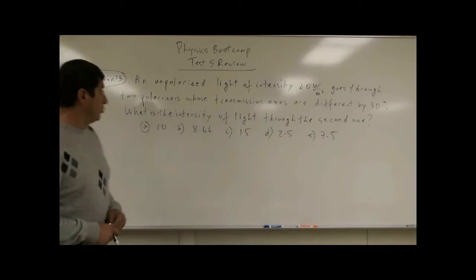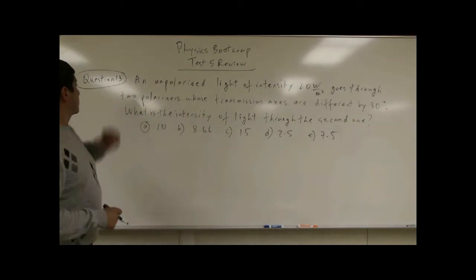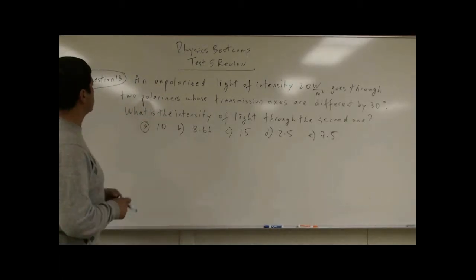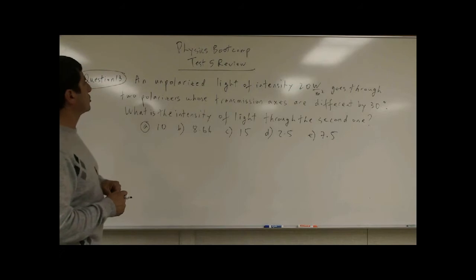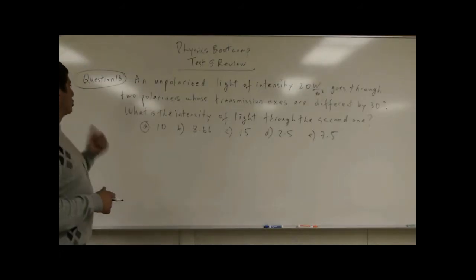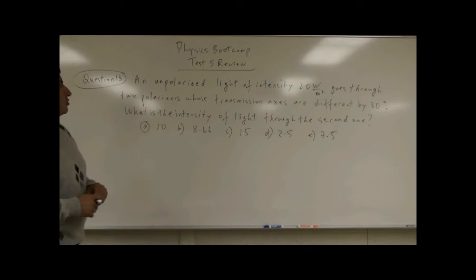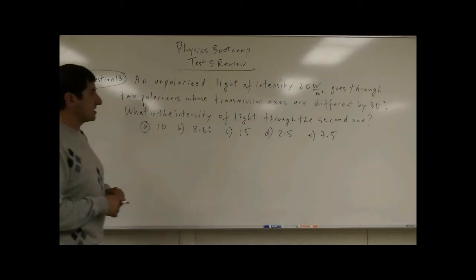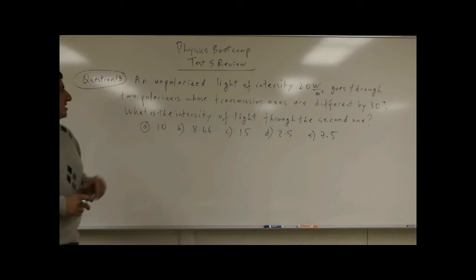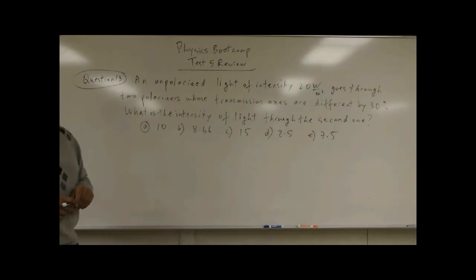We're doing a test five review now, question 13. Question 13 says: unpolarized light of intensity 20 watts per meter squared goes through two polarizers whose transmission axes are different by 30 degrees. What is the intensity of light through the second one?